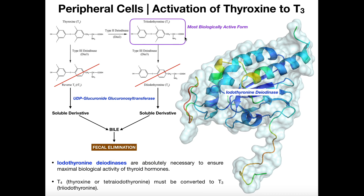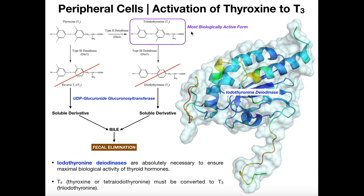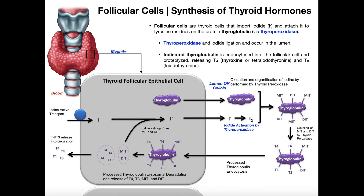So again, it is important to understand that we mostly generate T4 and only a little T3, but T3 is the most biologically active form of the thyroid hormone. Once at the level of cells that require thyroid hormone, they can convert T4 into T3. Hopefully this process of thyroid hormone synthesis makes sense.